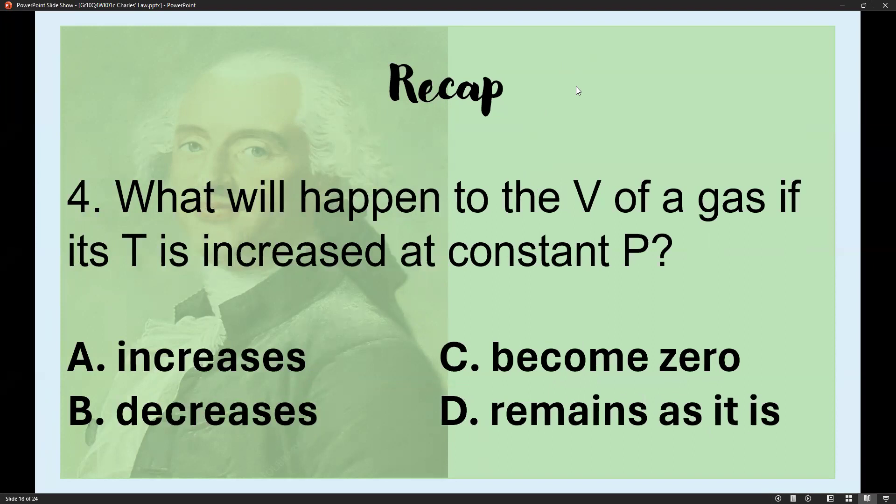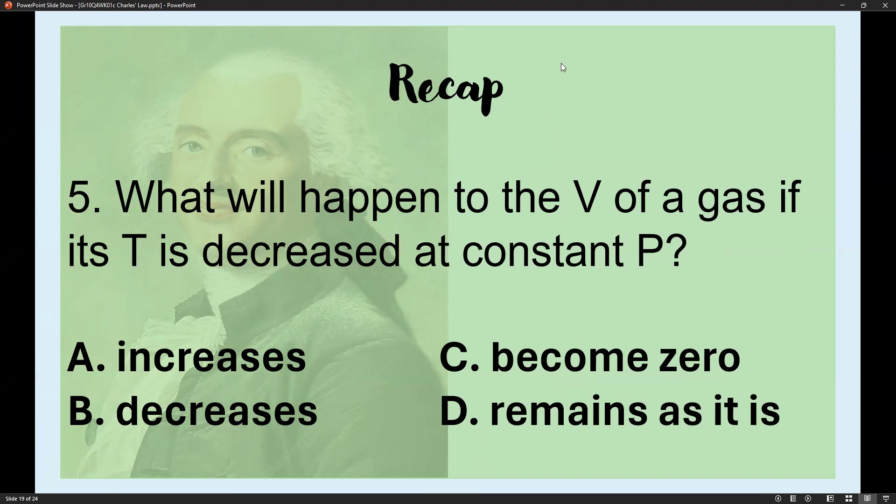Number four: What happens to volume if temperature is increased at constant pressure? When temperature increases, volume also increases, letter A. Number five: What happens to volume if temperature is decreased at constant pressure? When one variable decreases, the other also decreases, letter B.